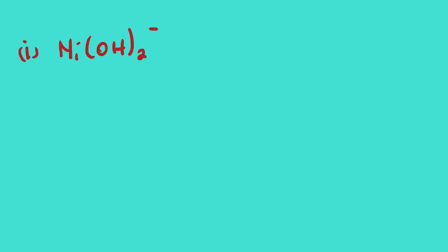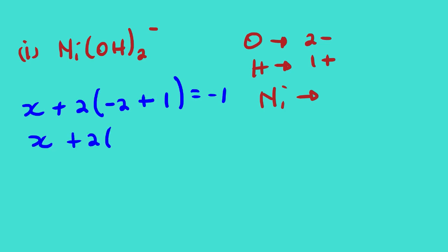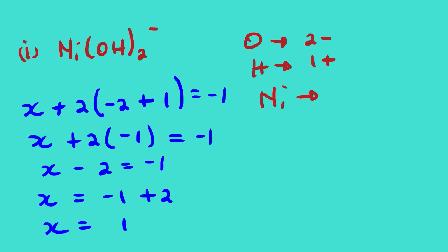Example 9: Ni(OH)⁻. Oxygen is 2−; hydrogen is 1+. The overall charge is −1. Setting up: x + 1(−2) + 1(+1) = −1 → x − 1 = −1 → x = −1 + 1 → x = 1+. The oxidation number of nickel in this ionic compound is 1+.